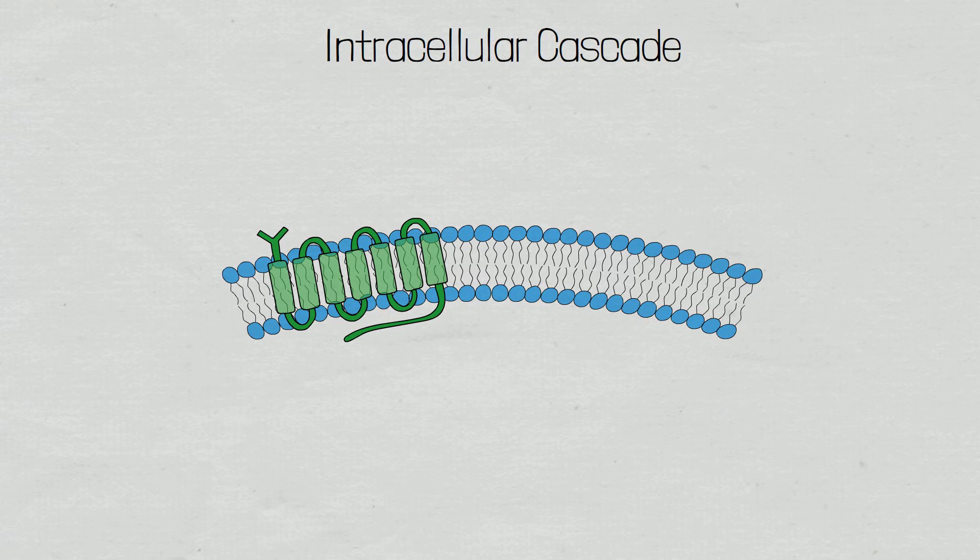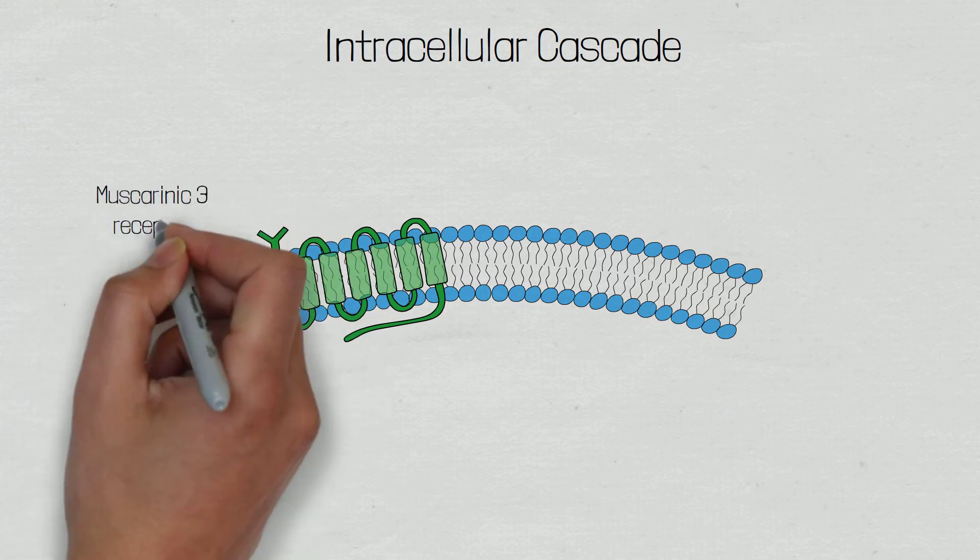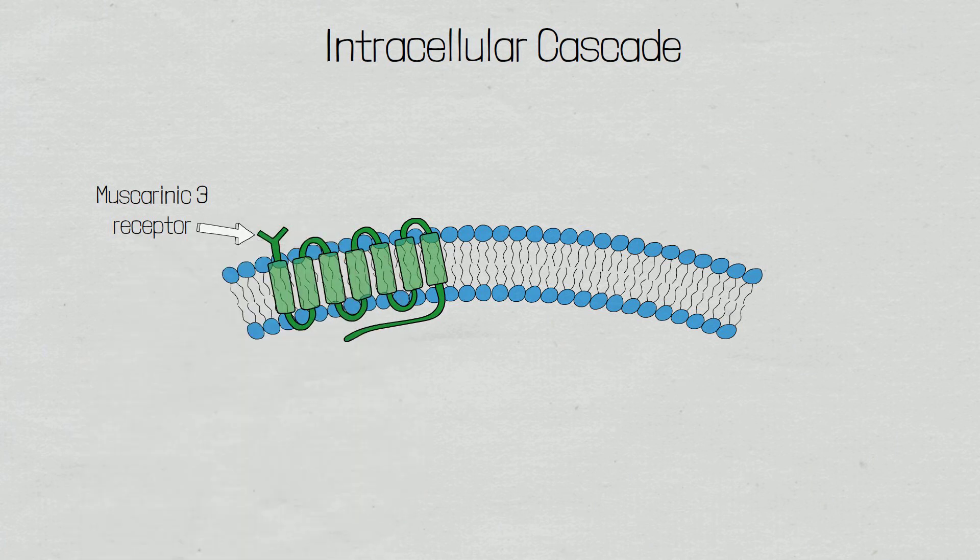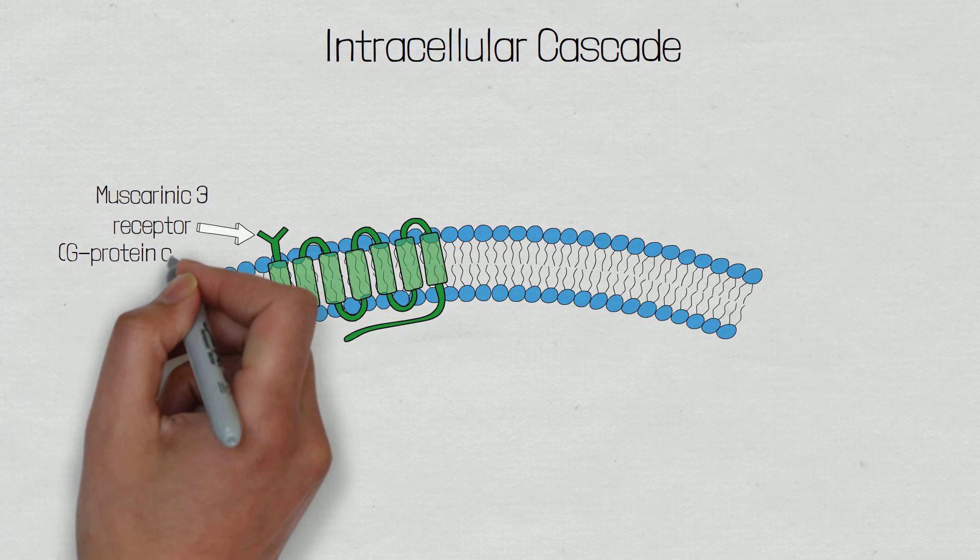Timestamps are in the description below. Muscarinic type 3 receptors are 7 transmembrane receptors, which mean they pass through the membrane and do so 7 times. Each of these 7 subunits that pass through the cell wall are called alpha helices, and an alpha helix is how we describe a coiled shape of an amino acid.